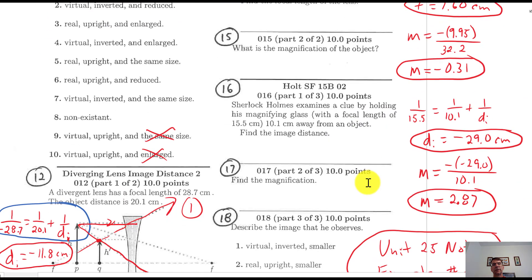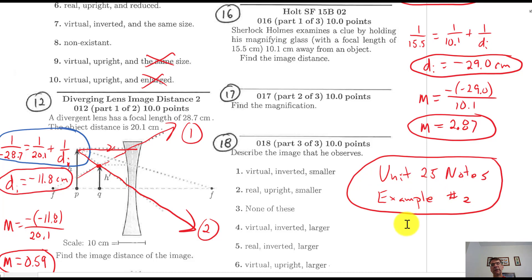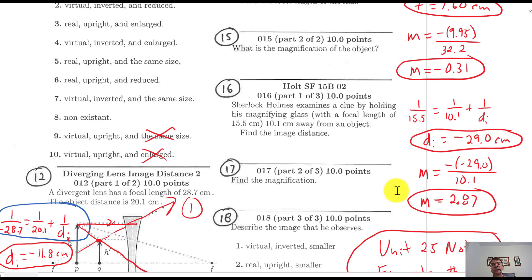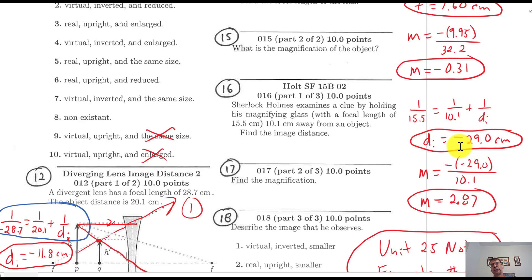Number 16: Sherlock Holmes using a magnifying glass. This is example number 2 from Unit 25 notes. The object is inside the focal length. Whenever the object is inside the focal length for a converging lens, you get magnification and a virtual image. D sub I is negative 29, so the magnification is the negative of negative 29 — giving a positive magnification. Key rule: when D sub I is negative, it's a virtual image. When M is negative, it's a real image.